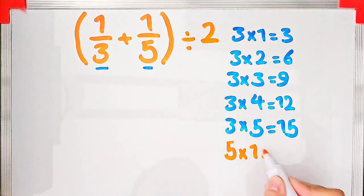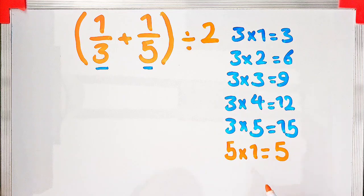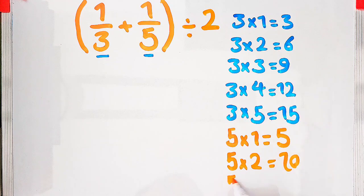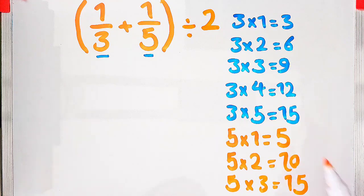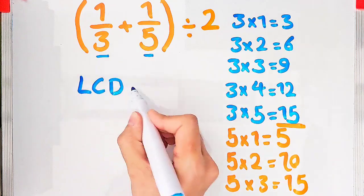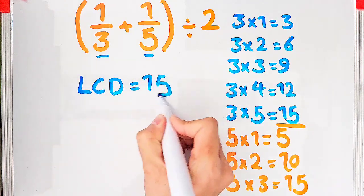Okay guys, let's write the multiples of five. Five times one equals five, five times two equals ten, and five times three equals fifteen. Now we find the common denominator of these fractions, or the smallest common multiple between them. So the LCD is 15.